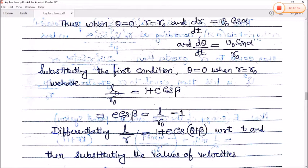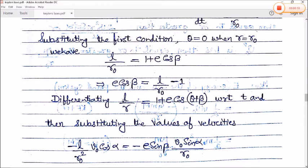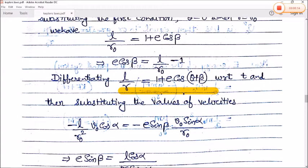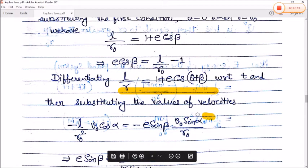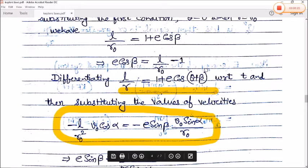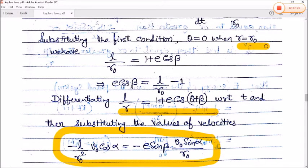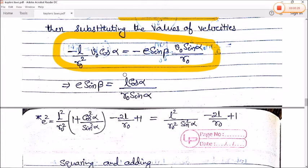Differentiating l/r with respect to t and substituting the velocity values dr/dt = v₀cosα and dθ/dt = v₀sinα/r₀ at r = r₀, θ = 0, we obtain: e·sinβ = l·cosα / (r₀·sinα).